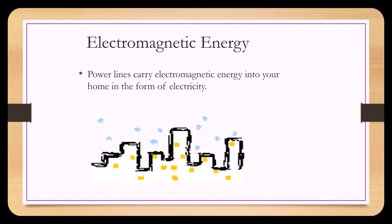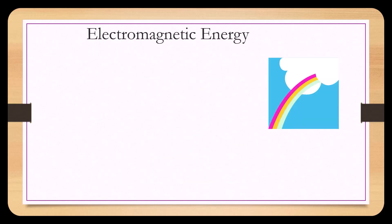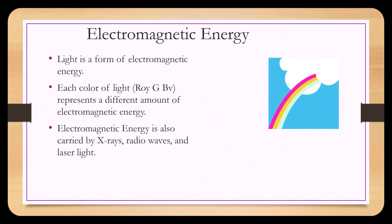Power lines carry electromagnetic energy into your home in the form of electricity. Light is a form of electromagnetic energy. Each color of light represents a different amount of electromagnetic energy. Electromagnetic energy is also carried in X-rays, radio waves, and laser light.